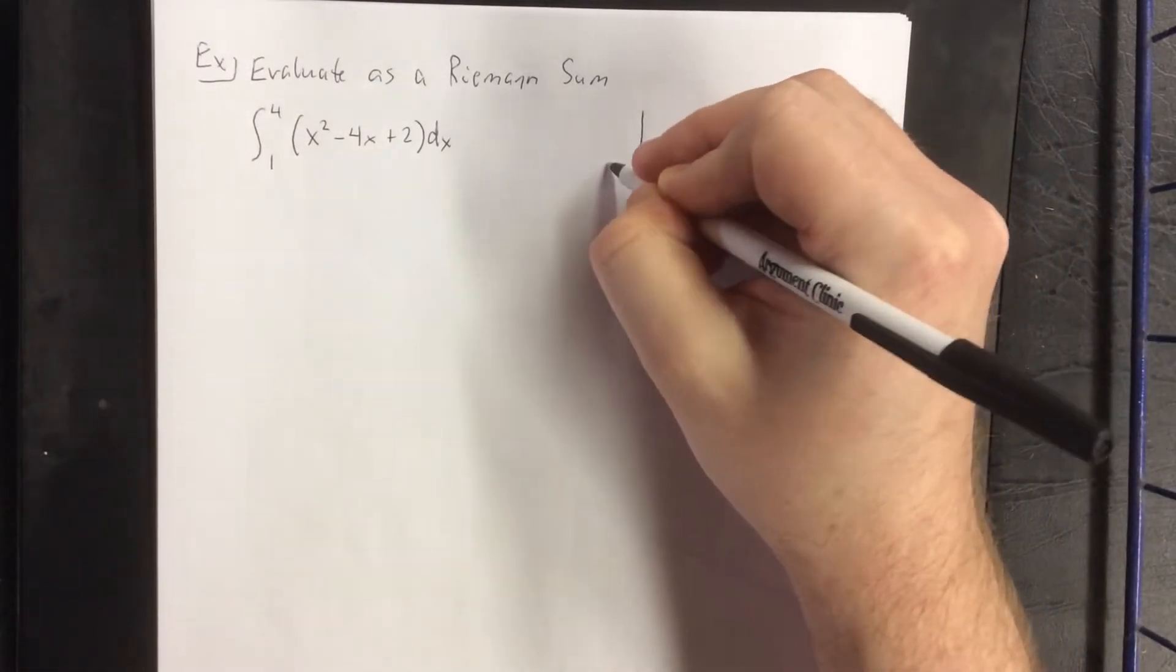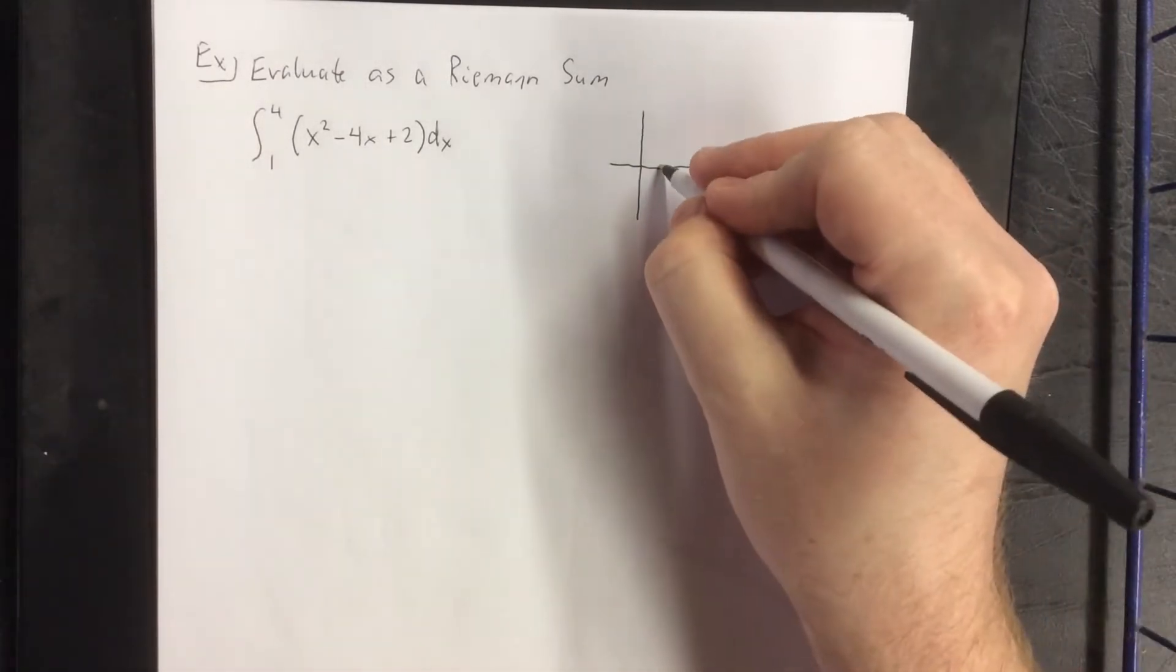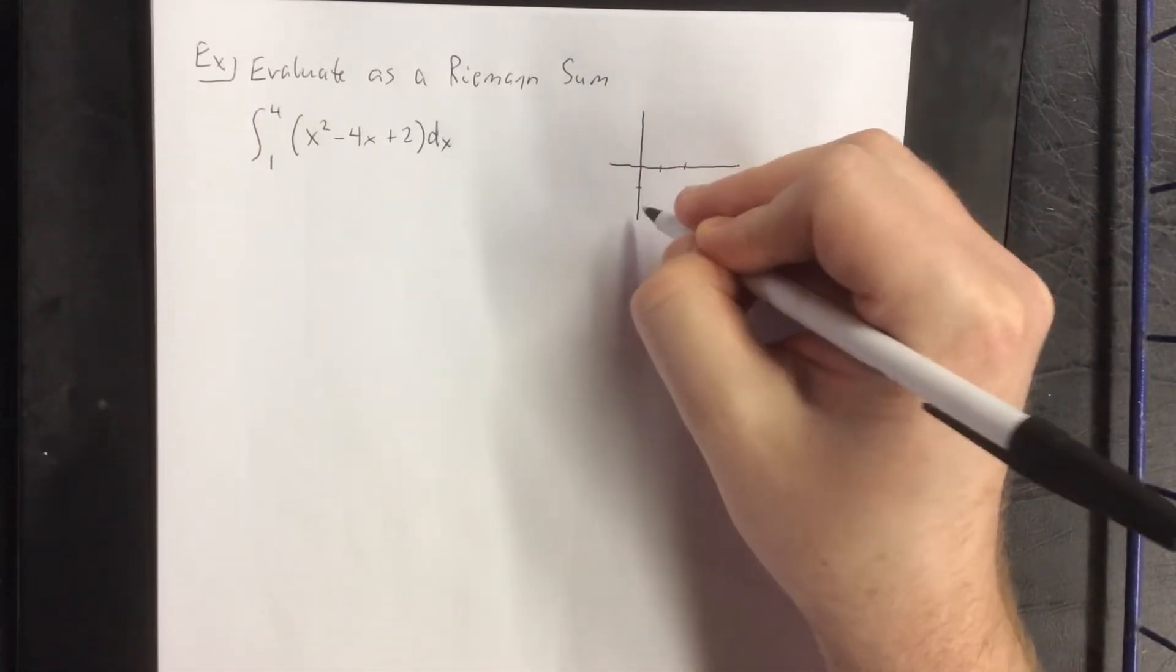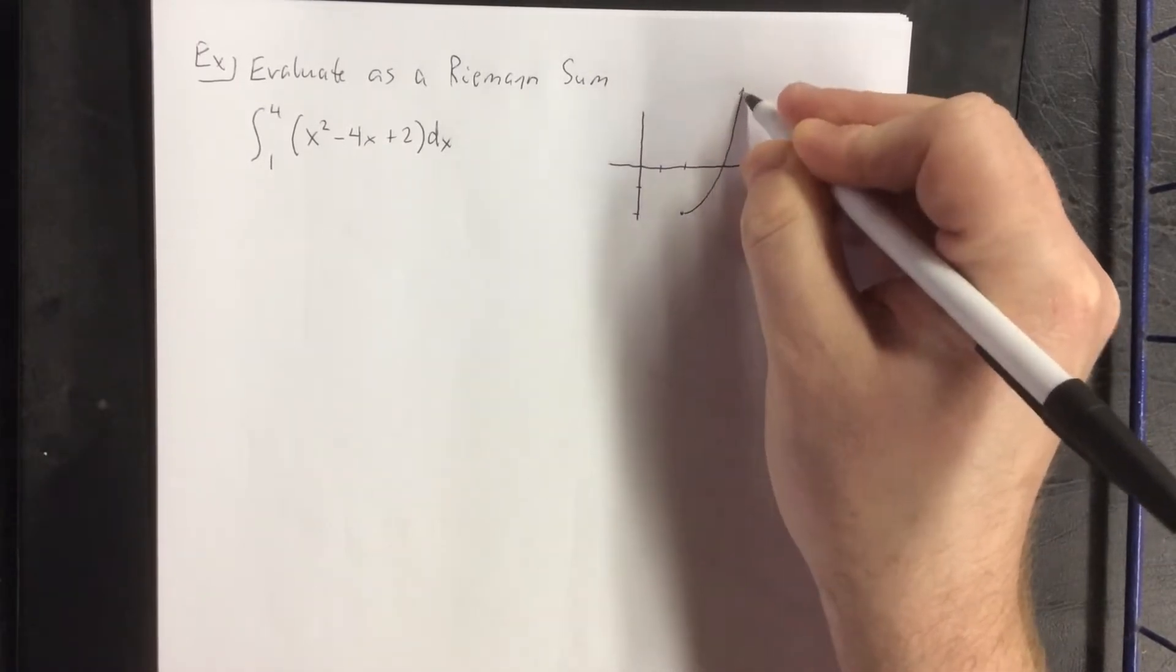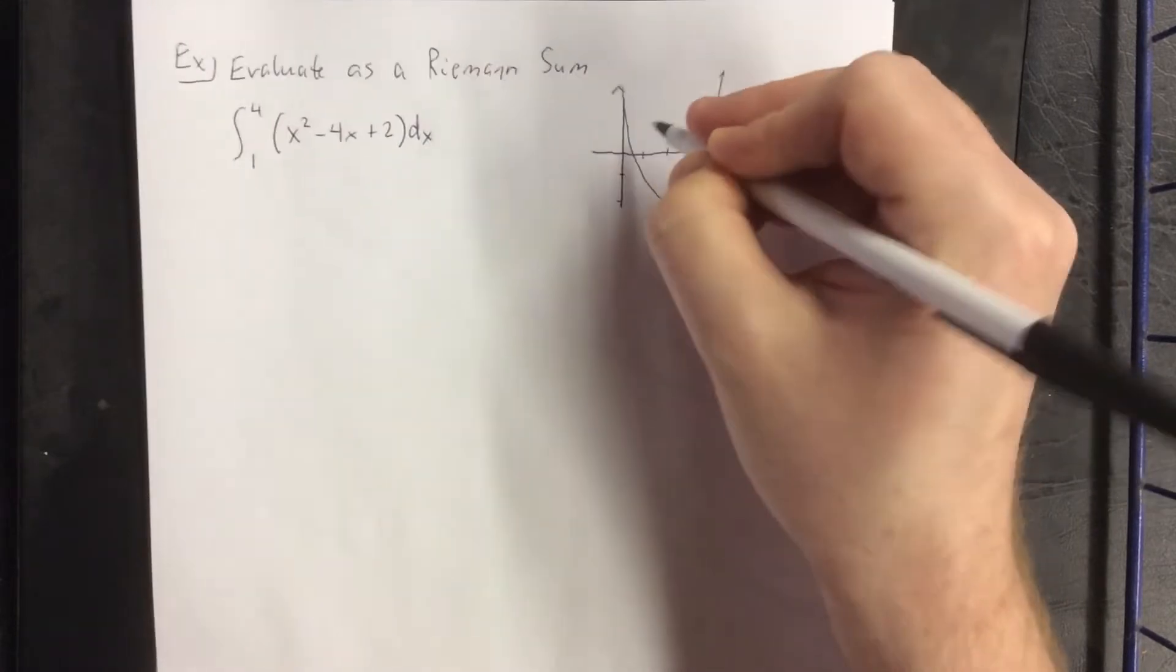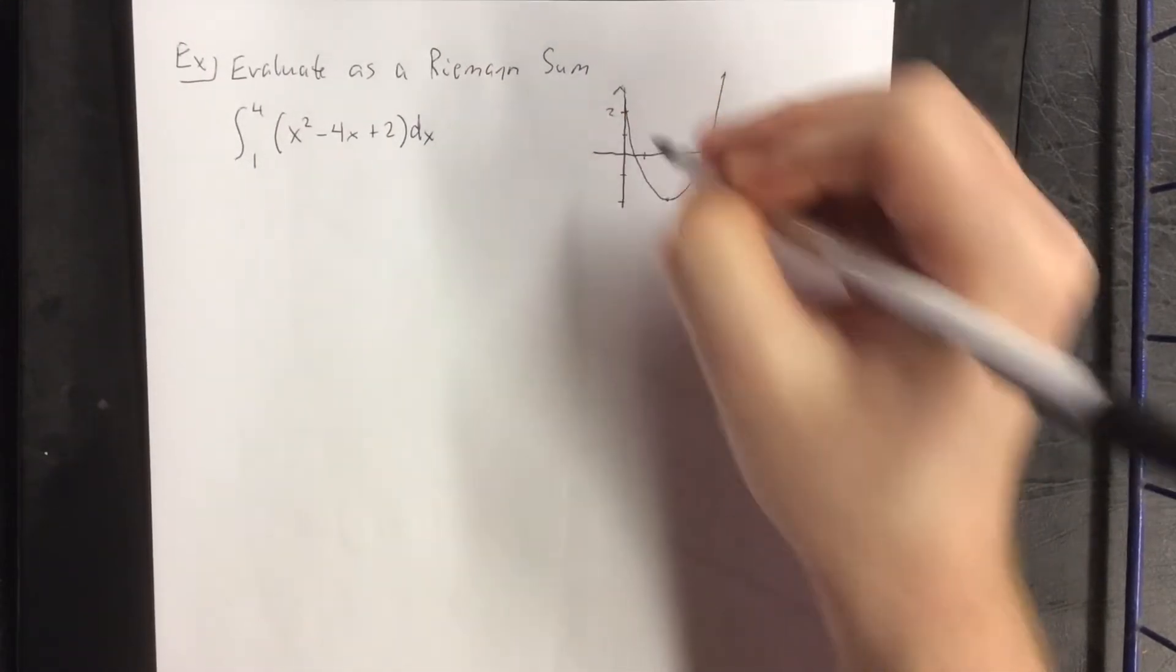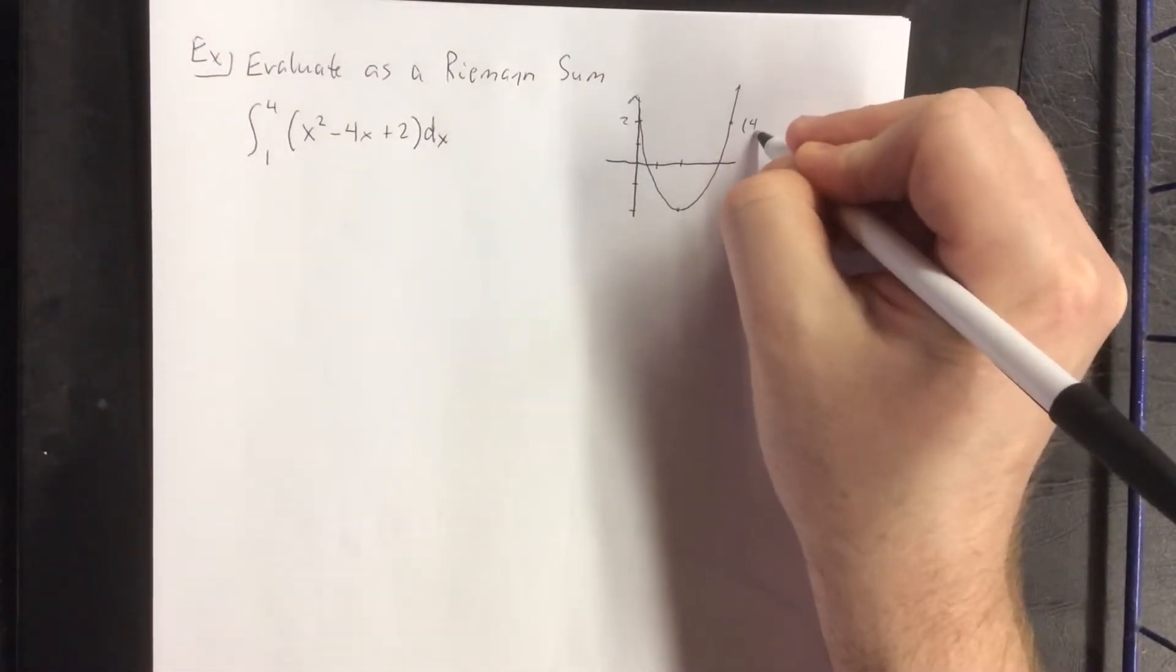So first and foremost, if we were to graph this, we would get a parabola that opens upward with a vertex located at the ordered pair (2, -2). So it'll open upward like so. Y-intercept will be up at positive 2 as well and a symmetric point over here at (4, 2).